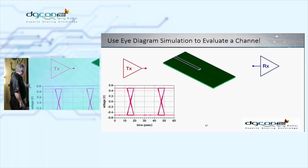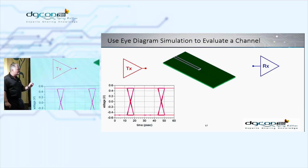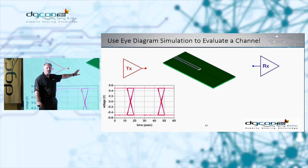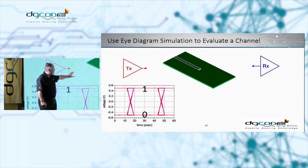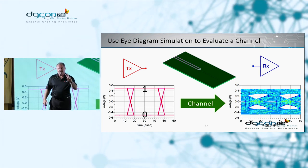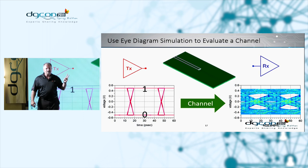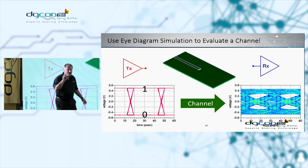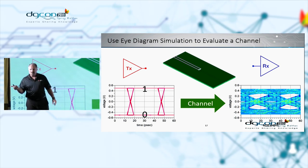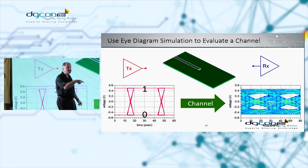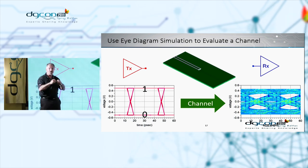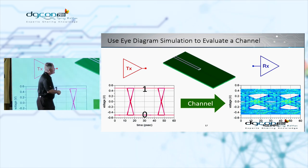We have a transmitter sending very fast, sharp edges — a perfect transmitter. We send it through FR4, which is a lossy material. What's going to happen? We're going to close the eye. There are two types of loss: dielectric loss in FR4, which is a shunt loss, and skin effect loss — when current crowds on the outside — which is a series loss. Both are important.